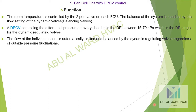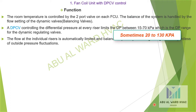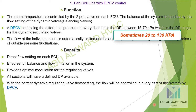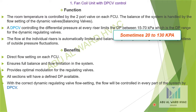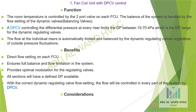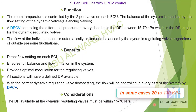A DPCV controlling the differential pressure at every riser limits the DPE between 15 to 70 kPa, which is the operating range for the dynamic regulating valves. The flow at individual risers is automatically limited and balanced by the dynamic regulating valves regardless of outside pressure fluctuations. Benefits: direct flow setting on each FCU ensures full balance and flow limitation; optimal modulation for regulating valves; all sections have a defined DP available. Consideration: DP available at the dynamic regulating valves must be within 15 to 70 kPa.